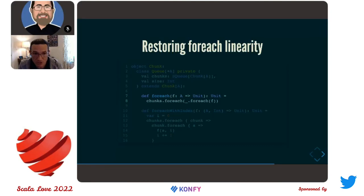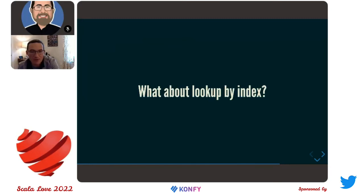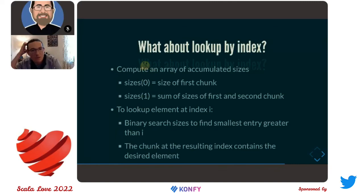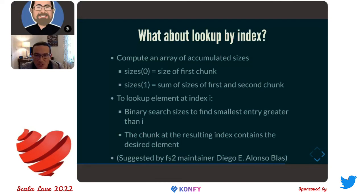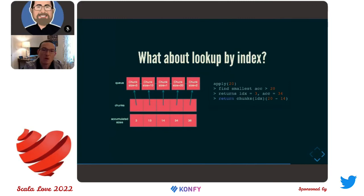What's left is `apply` — that lookup by index. Do we want to give up efficient lookup by index? We don't. One of my co-maintainers, Diego, came up with this idea: to implement effectively constant-time lookup, what if we created an array of accumulated sizes and just binary searched it? Finding the element that contains the index in question, then doing the offset calculation to return the direct element. Lookup becomes logarithmic.